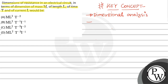We want to express fundamental quantities in terms of mass, length, time, and current. This is also based on Ohm's law, which is given by V equals I into R, where R is resistance, I is current, and V is voltage applied.